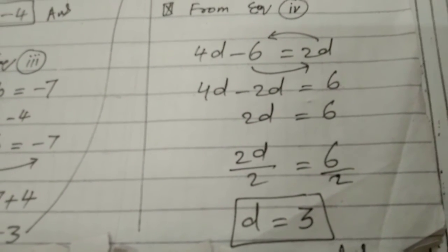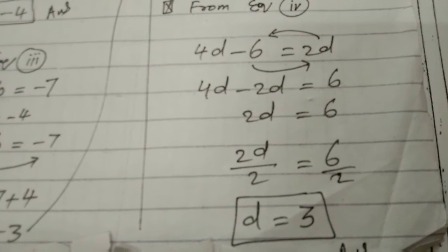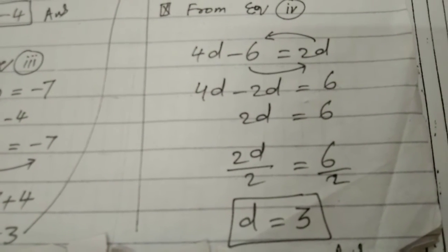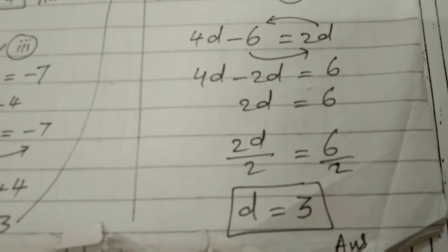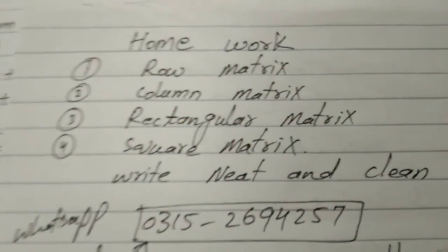2d is equal to 6. Dividing both sides by 2, and we get d is equal to 3.